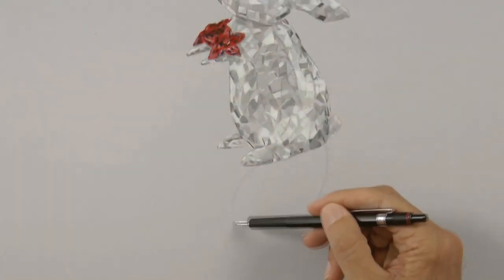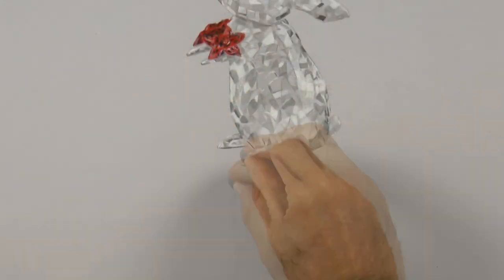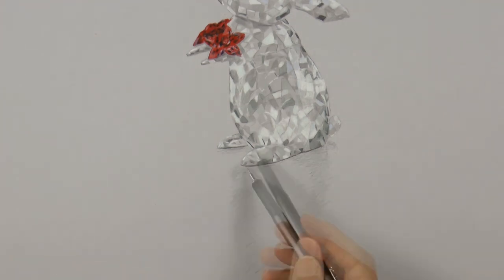We can do the main shadow with a graphite pencil. And I will smudge it with a chamois, leaving a lighter area in the middle.